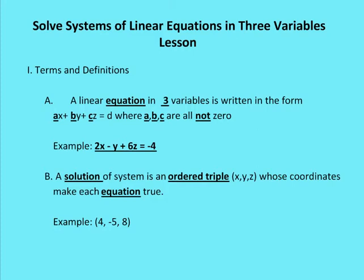A solution of a system is going to be an ordered triple whose coordinates make each equation true. Before, when we had a system of linear equations in two variables, we had what's called an ordered pair — a set of coordinates on a two-dimensional x-y plane that made each of the equations true. Now we're dealing with three variables and we have an ordered triple x, y, z. Those coordinates represent a spot in space.